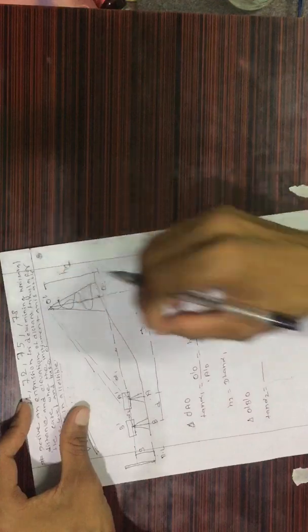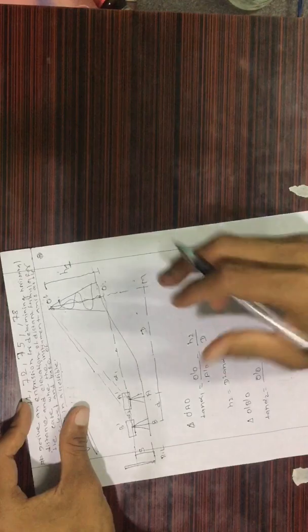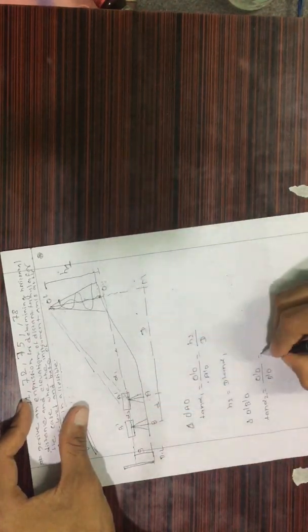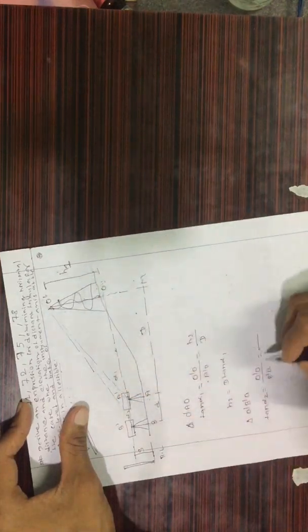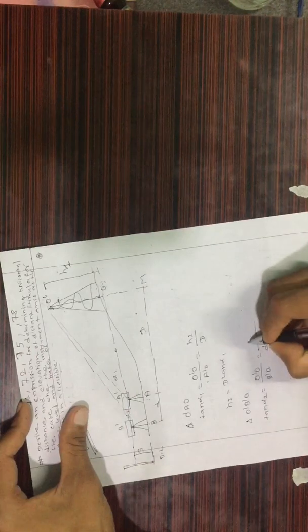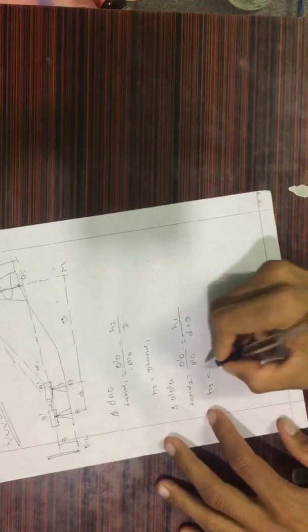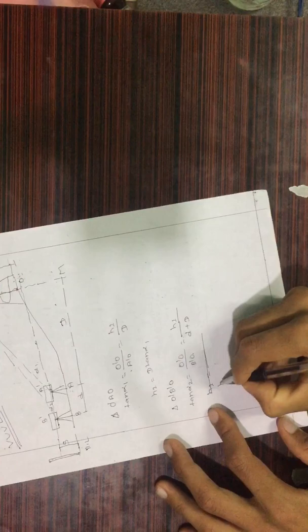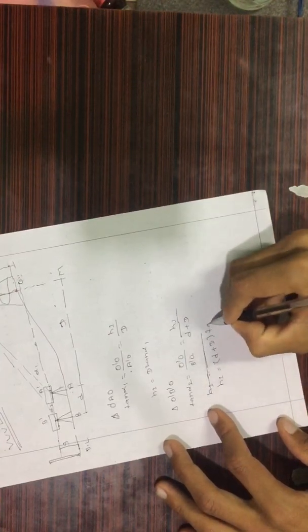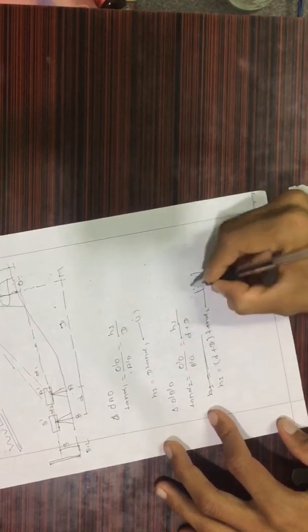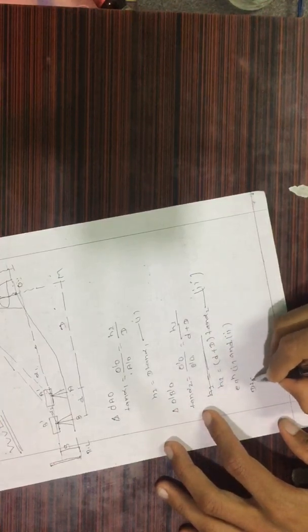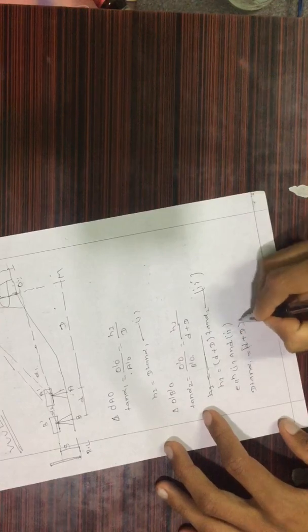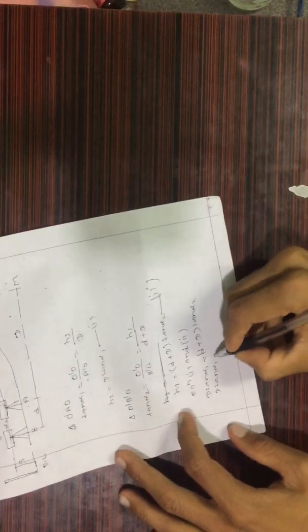This pattern gives equations 1 and 2. Whenever h1 is equal to our u — h1 is equal to d plus d tan alpha 2. Equating the first and second equations: d tan alpha 1 is equal to d plus d tan alpha 2.